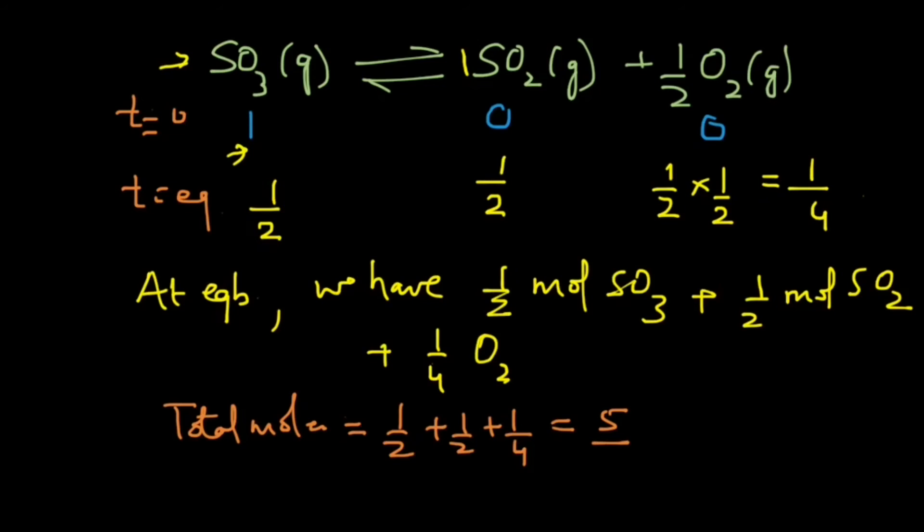And the total mass will be equal to half into molar mass of SO3, which is 80, plus half into molar mass of SO2 that gives you 64, plus one-fourth into molar mass of oxygen that is 32.